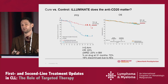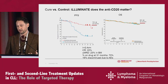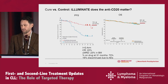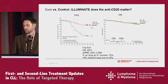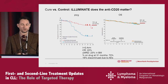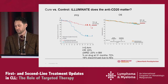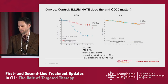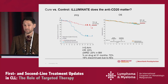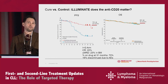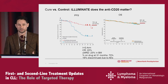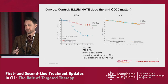We know rituximab doesn't seem to add much. Can anti-CD20 matter? We don't have head-to-head data for ibrutinib versus ibrutinib-obinutuzumab, but when you look at the PFS curves they're very similar. We do see higher CR rates — in my opinion you just get there sooner with obinutuzumab. There are higher undetectable MRD rates, but why does that matter if you're not going to stop treatment? And how much MRD conversion is needed to impact long-term PFS? Toxicity and discontinuation remain issues for continual therapy.